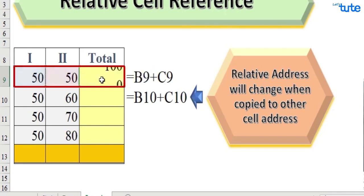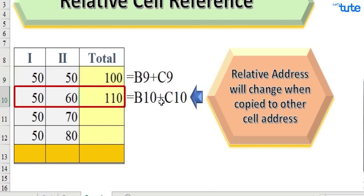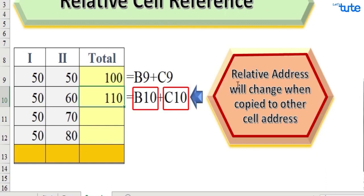Now if we copy the same formula here, we got the total as 110, and you can see here in the formula bar the cell number has changed. So relative address will change when copied to other cell address.